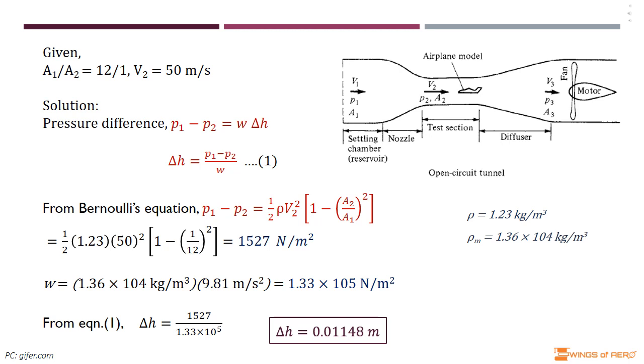We know the product of density and the acceleration of gravity is the weight per unit volume of the manometer fluid.